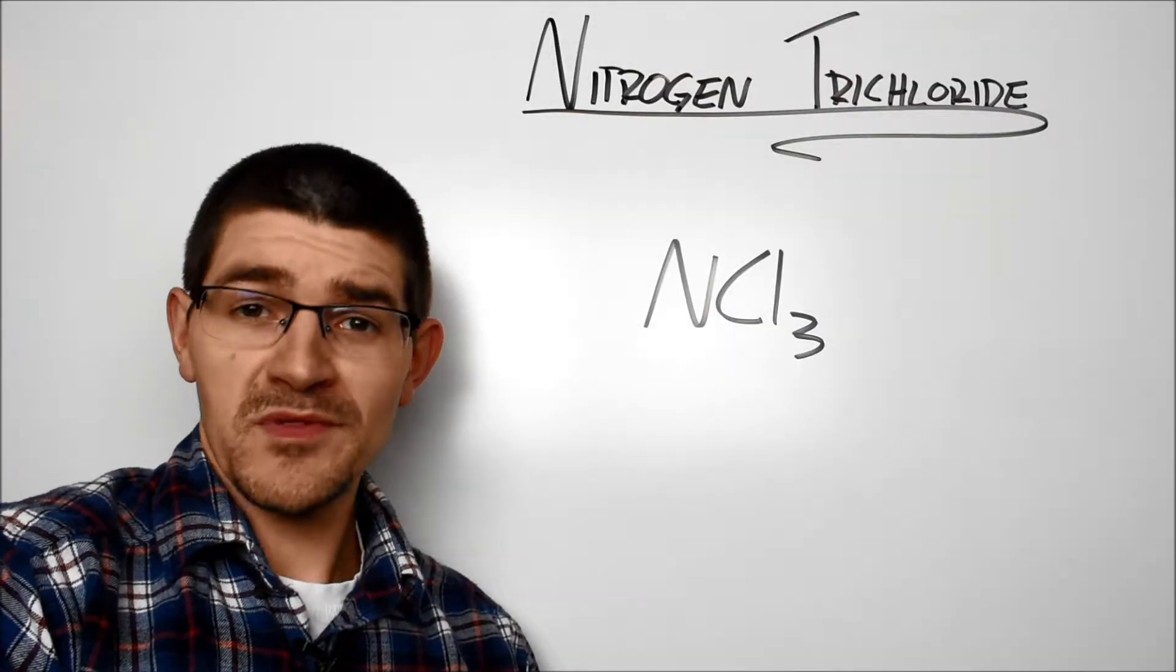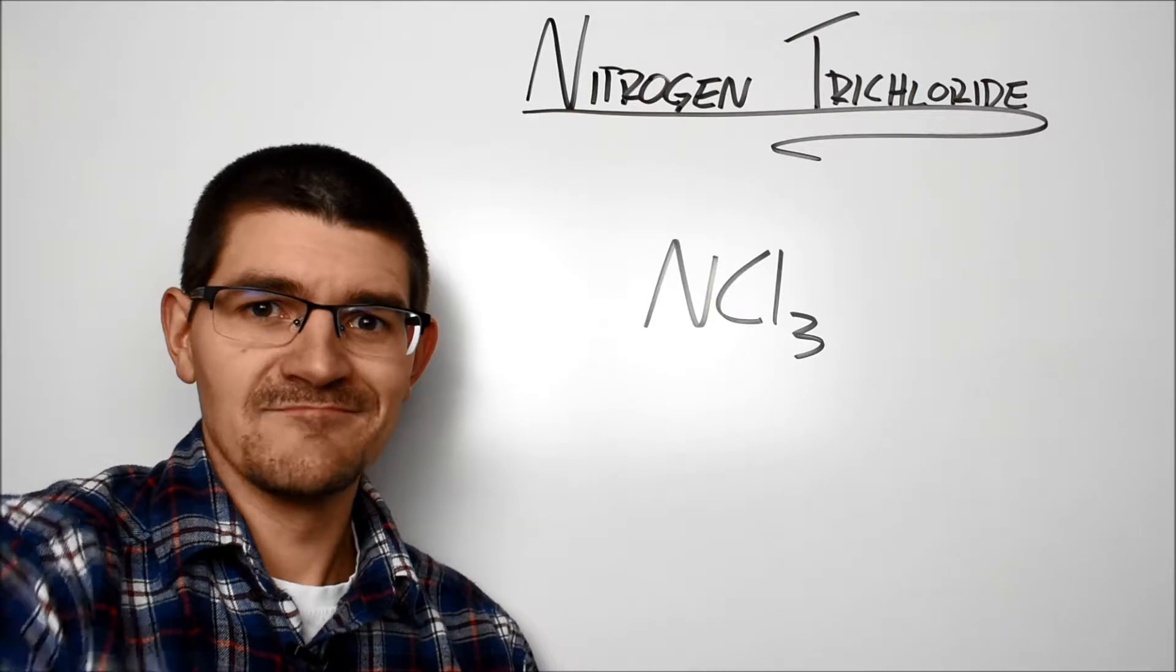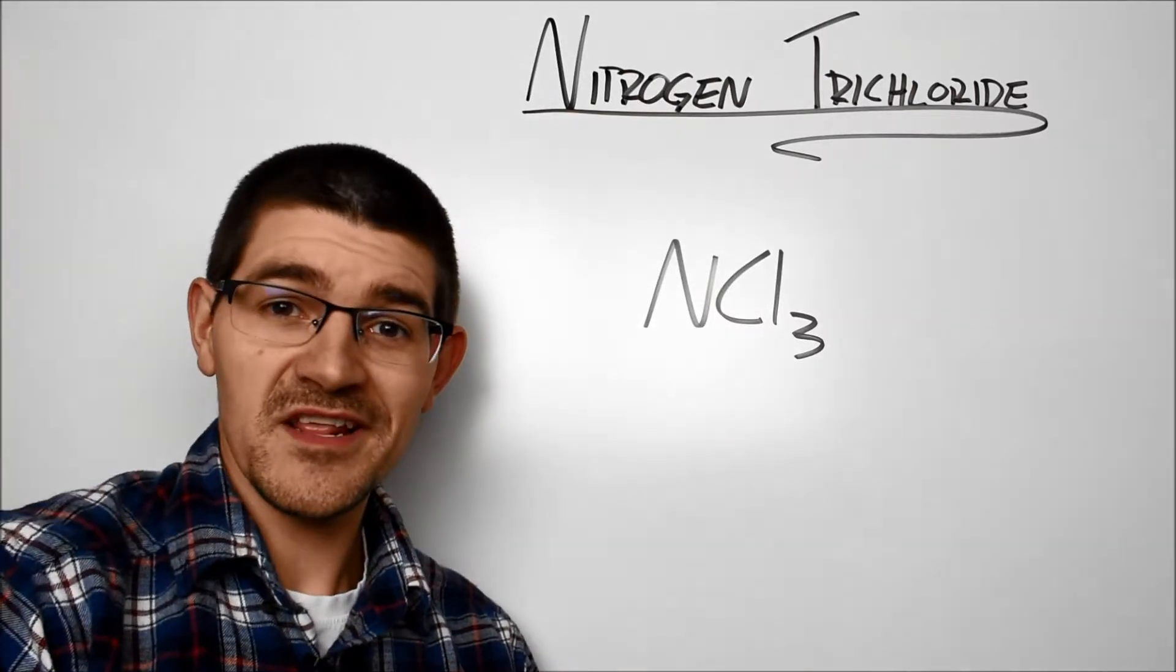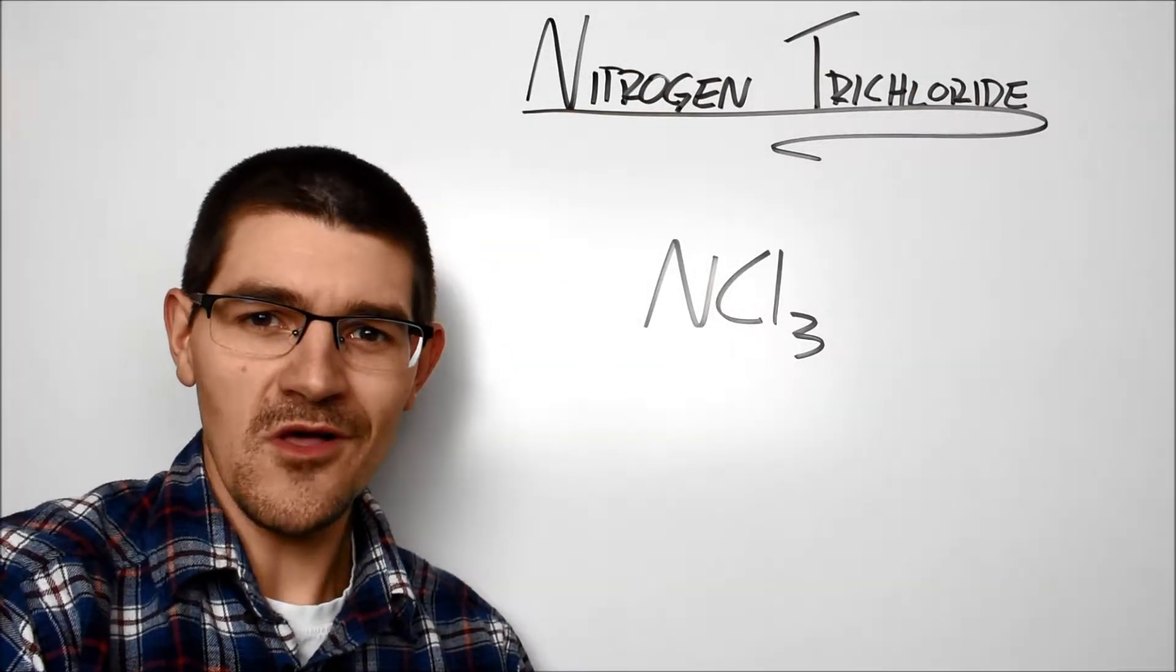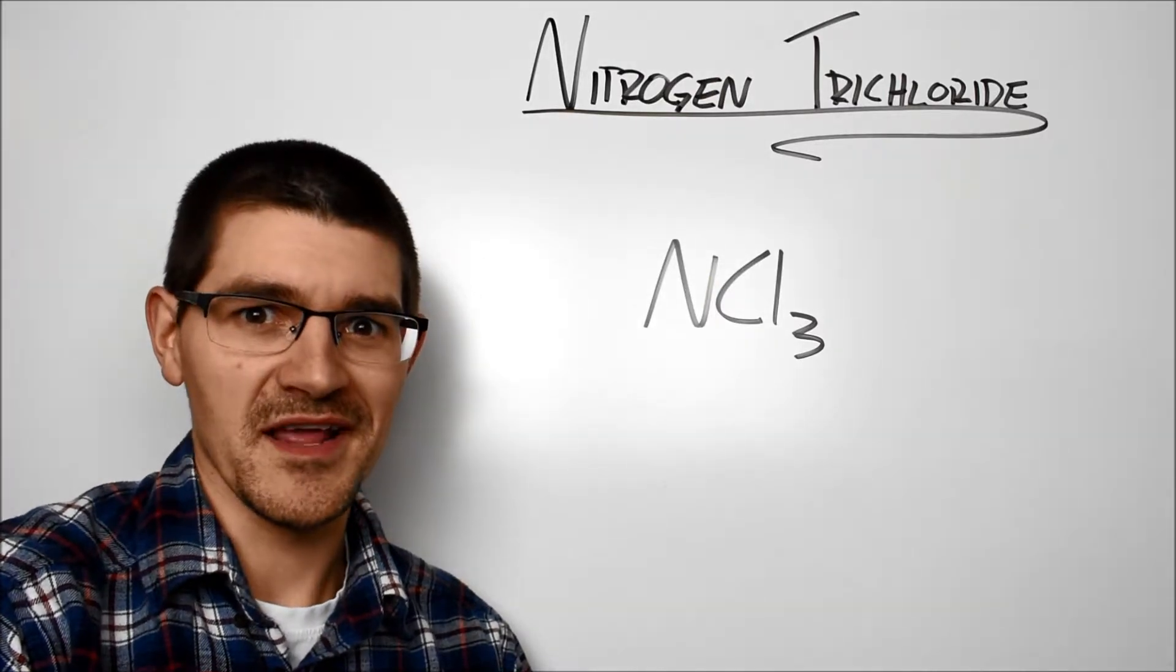You ever seen nitrogen triiodide, the purple explosive you can set off with a feather? Yeah, this is its little brother! Discovered in 1812 by French scientist Pierre-Louis Dulong, Dulong lost two fingers in an eyeball, but decided to keep working on it.